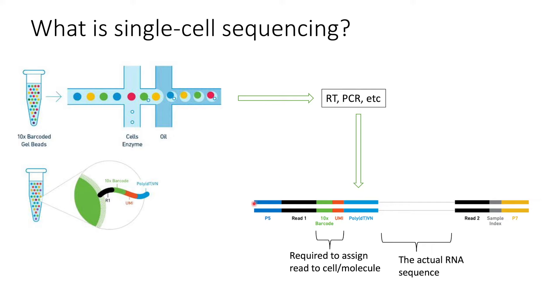And then you can process them individually in downstream reactions. And in the end, you have a library that looks like this, the two most important features being the 10x barcode, which is just a string of known nucleotides, which can identify which cell this read came from.